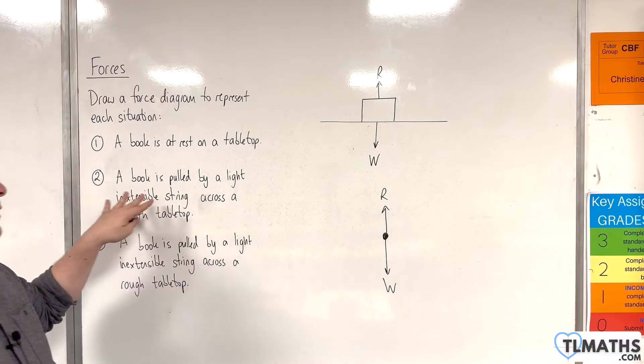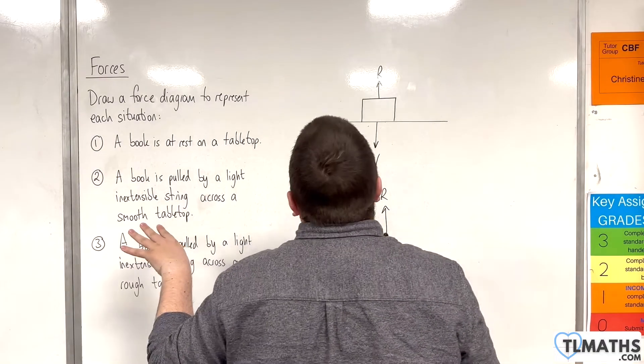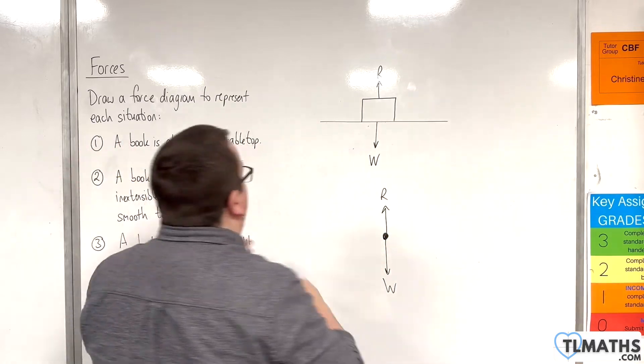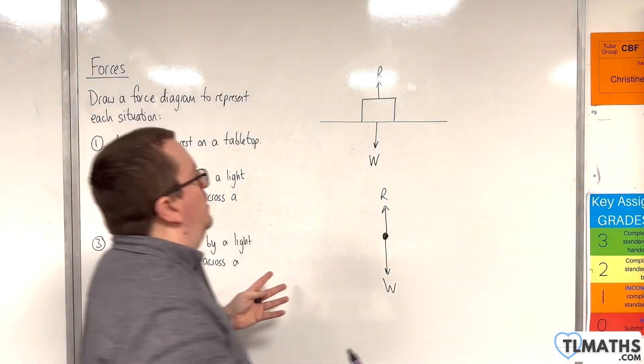But now it's being pulled by a light, inextensible string. Is it being pulled to the right? Is it being pulled to the left? Doesn't matter. You choose. So I'm going to say it's being pulled to the right.